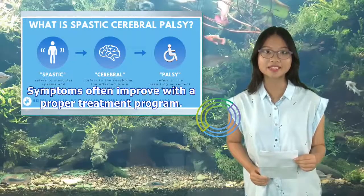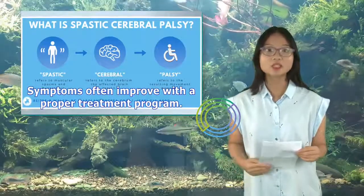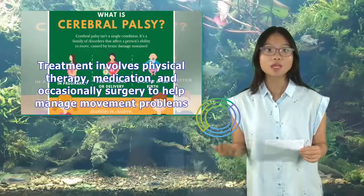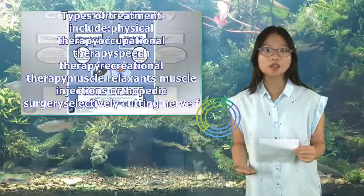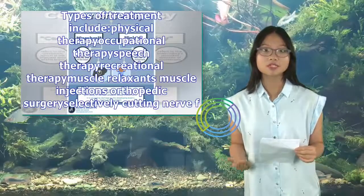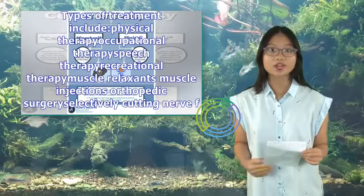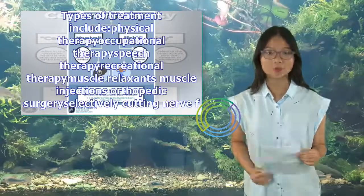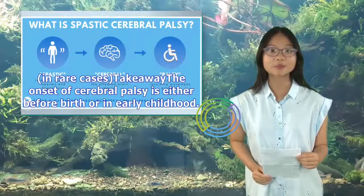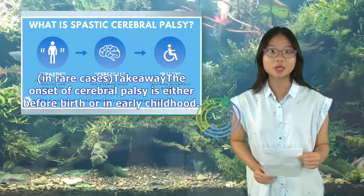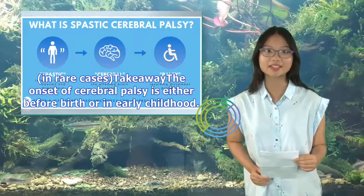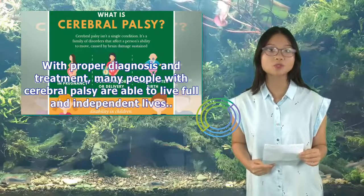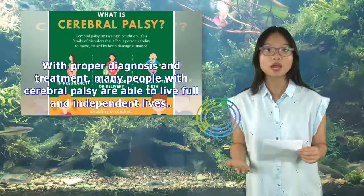Managing cerebral palsy: CP isn't degenerative and doesn't get worse with age, and symptoms often improve with a proper treatment program. Treatment involves physical therapy, medication, and occasionally surgery to help manage movement problems. Types of treatment include physical therapy, occupational therapy, speech therapy, recreational therapy, muscle relaxants, muscle injections, orthopedic surgery, and selectively cutting nerve fibers. With proper diagnosis and treatment, many people with cerebral palsy are able to live full and independent lives.